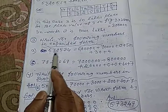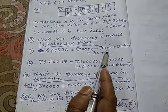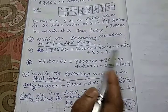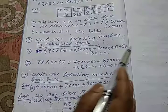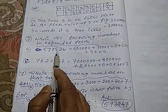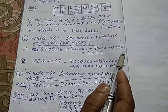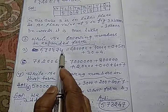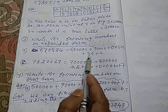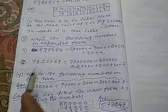Uske baad aapko 7 likhna hai. 7 ke baad kitna digit hai? 1, 2, 3, 4. So 1, 2, 3, 4, 0 likhu. Iske baad 0 hai, to 0 plus kar do. Second, 5 is in 100 place. That is 5 ke baad 2 digit hai. To 5 likhe, 2, 0 likhu. Uske baad 3, 4 hai. 3 ke baad 1, 0. And the last one place mein, jo 4 hai, 4 ko dal do.